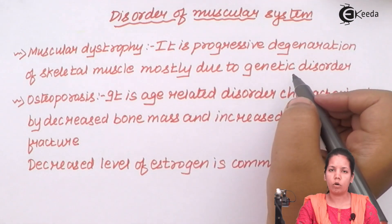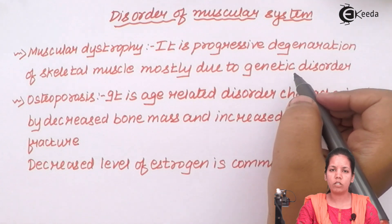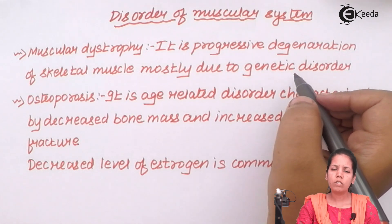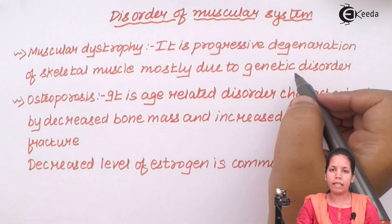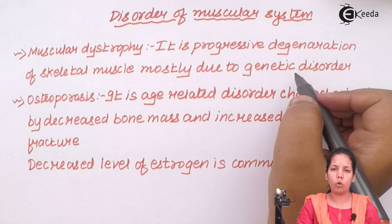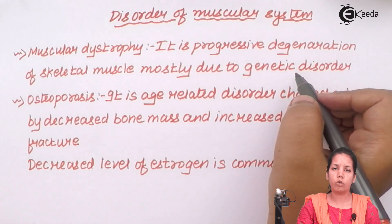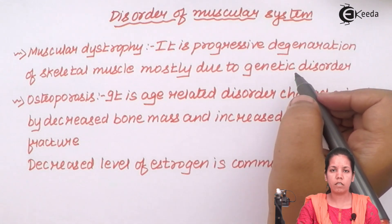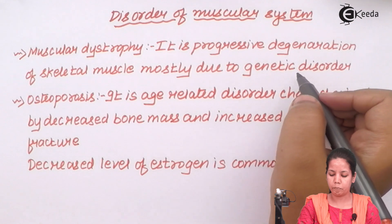Muscular dystrophy is mostly due to genetic disorders, and these genetic disorders are almost impossible to cure. They are due to a genetic mutation in your system — any change in the codons, the genes, or the proteins formed from them may lead to muscular dystrophy.